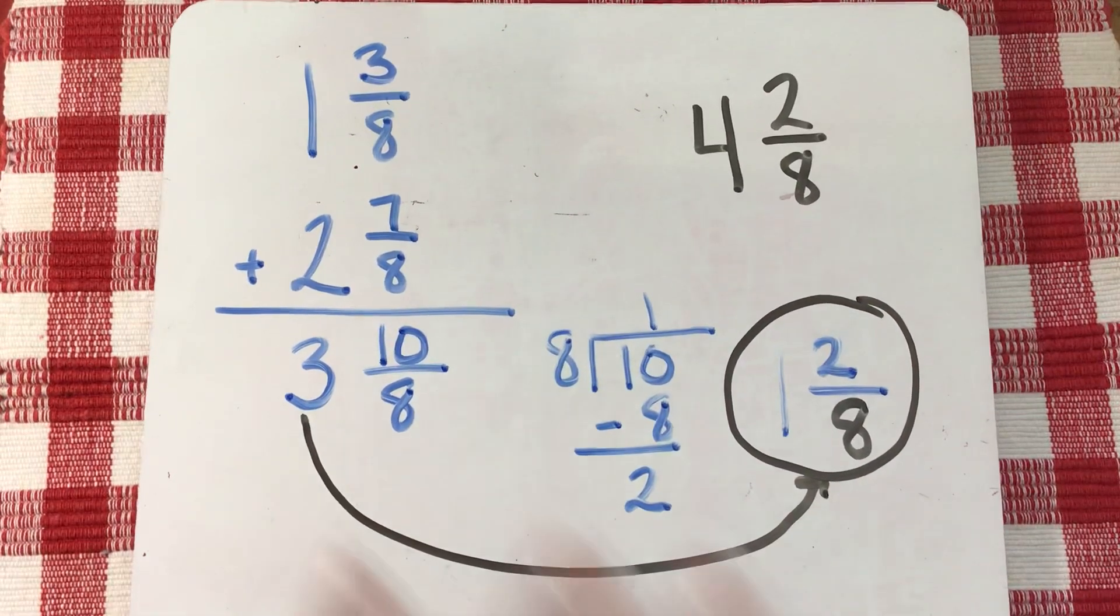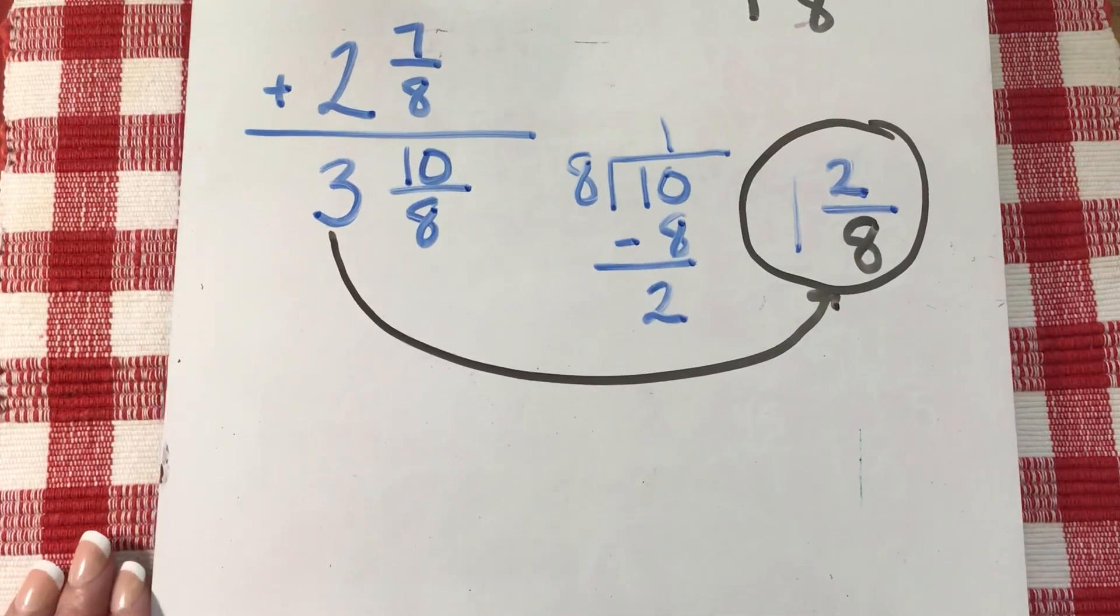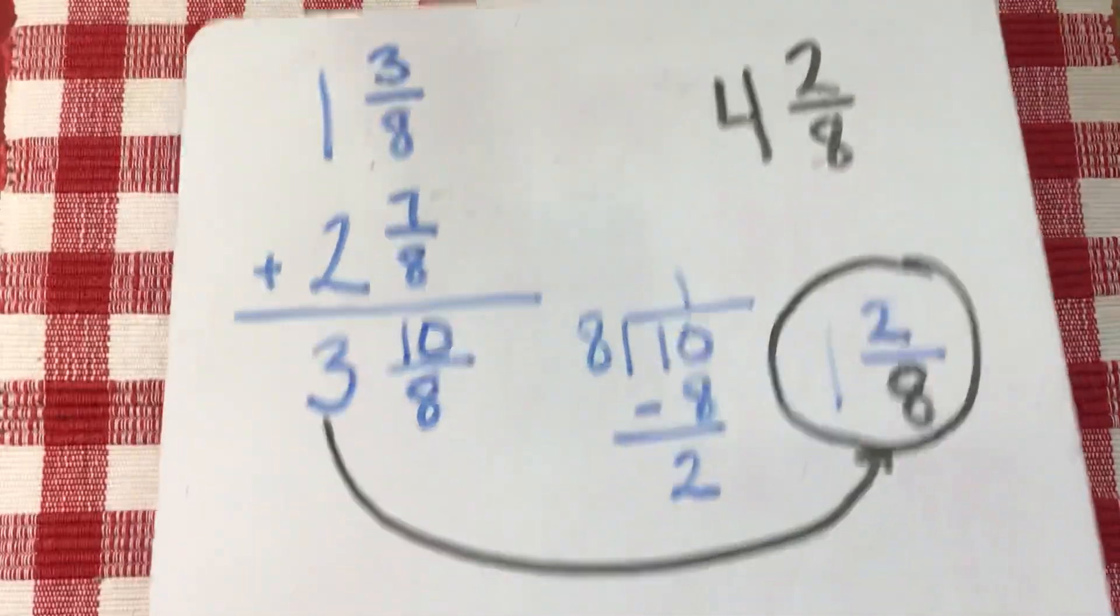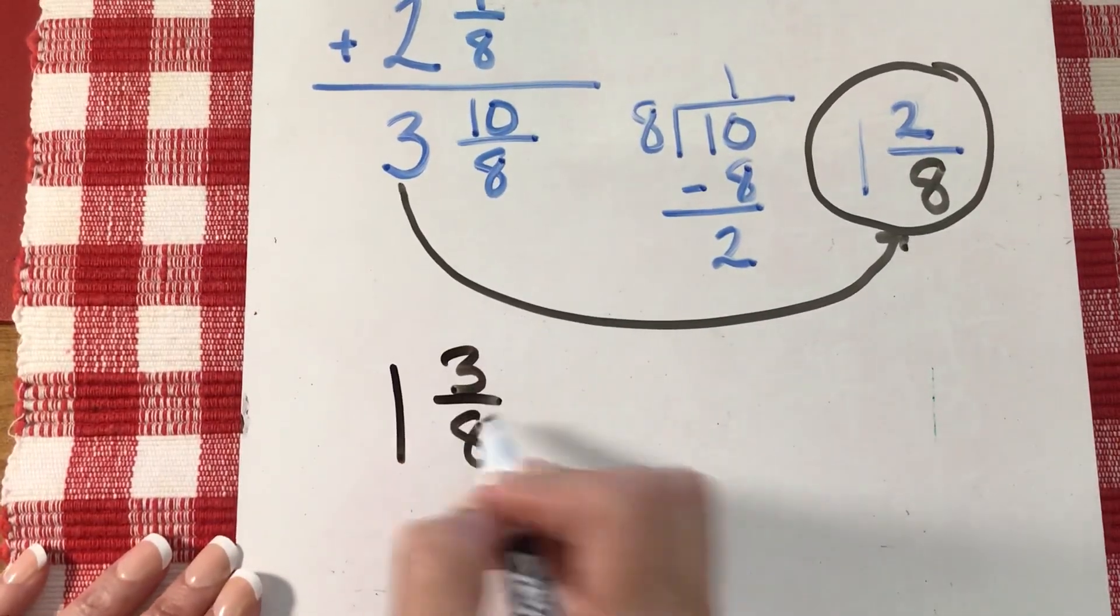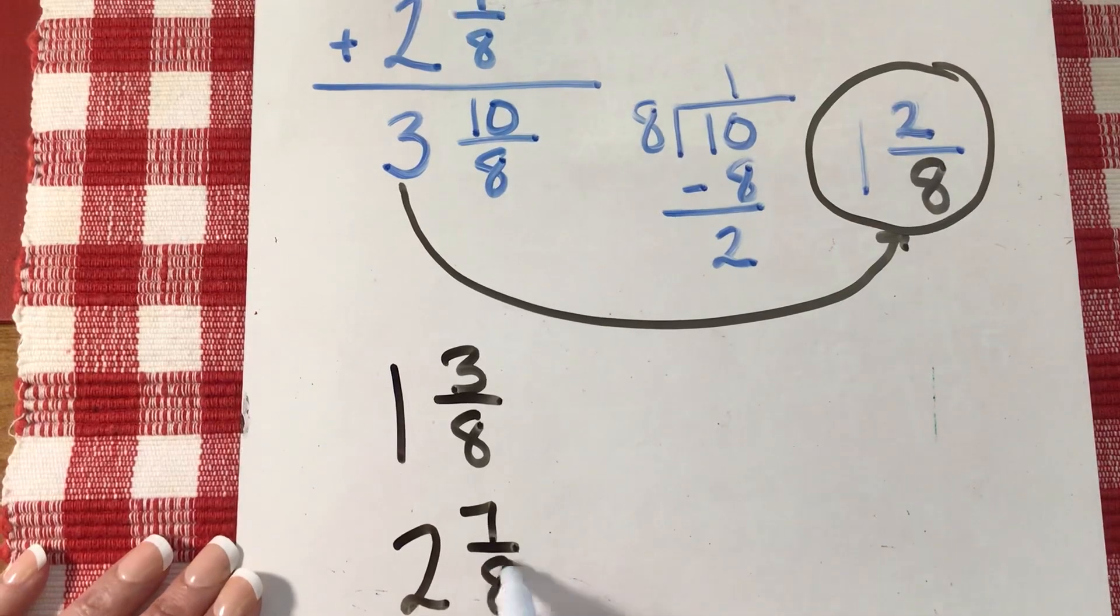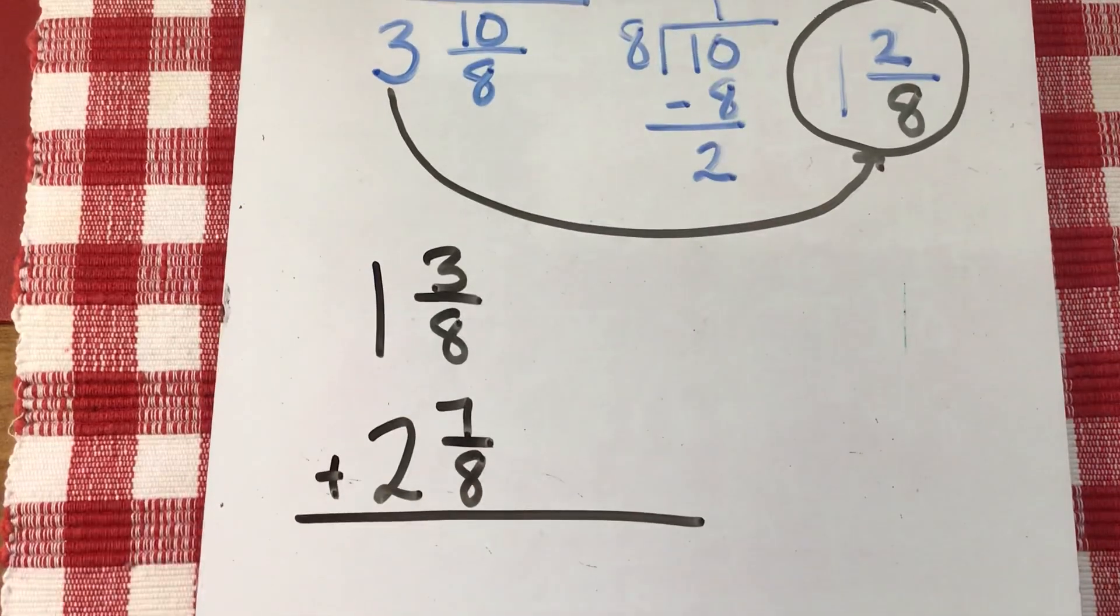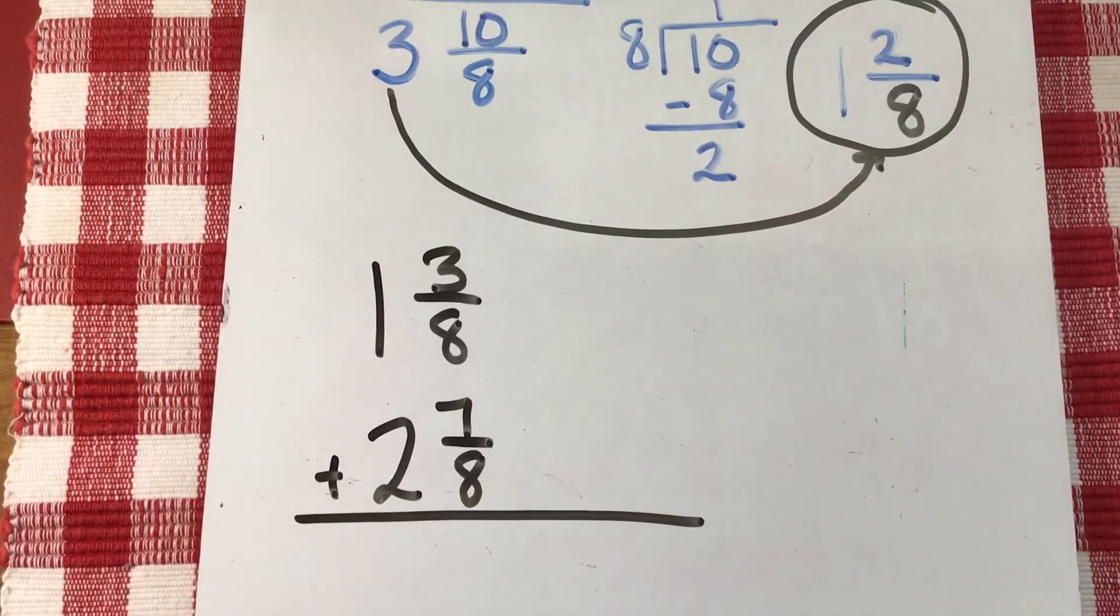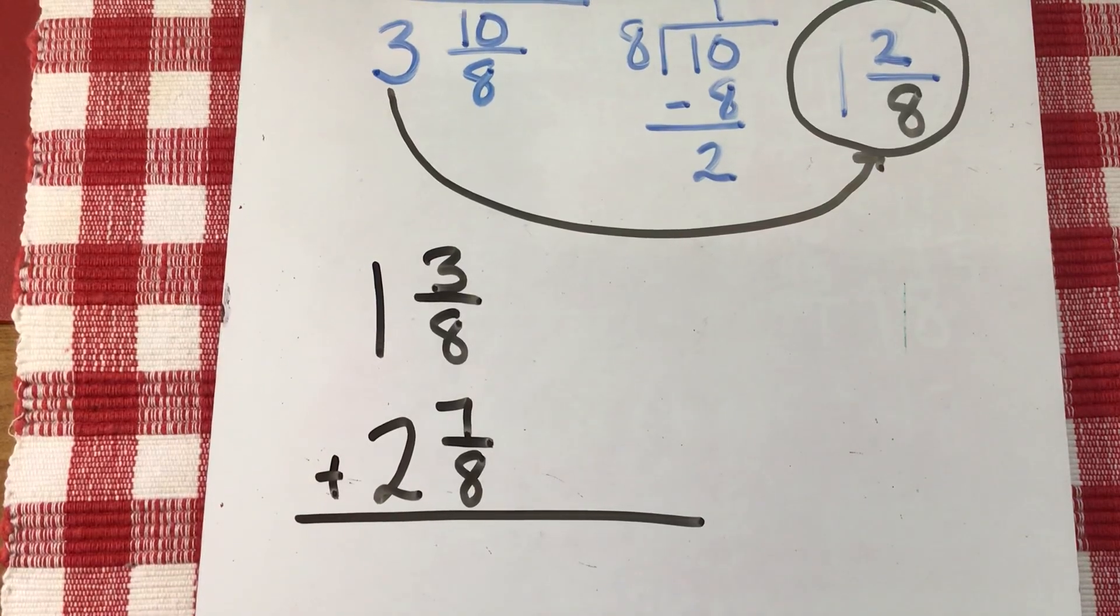That was one method to do it. If you want to do it that way, that's totally fine. I do want to revisit the other way that I showed you how to do it. I'm going to rewrite it here. One and three eighths, it's the same problem. Nothing's going to change. In this method, I take my mixed numbers and change them to improper fractions, then do the addition.